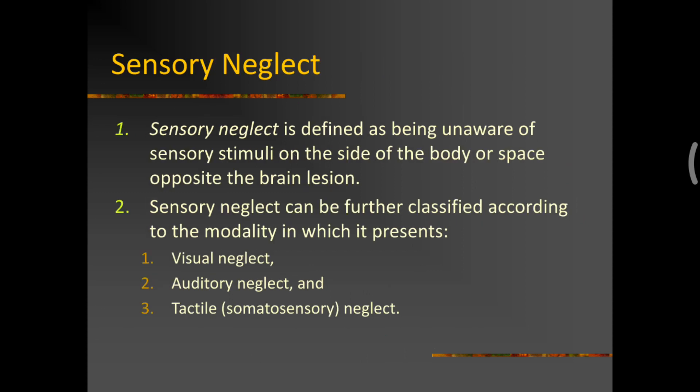So first is sensory neglect. Sensory neglect is defined as being unaware of sensory stimuli on the side of the body or space, which is commonly opposite to that of a brain lesion. In a sensory neglect, it can be further categorized into visual neglect, auditory neglect or a tactile neglect.